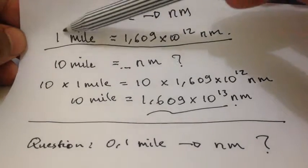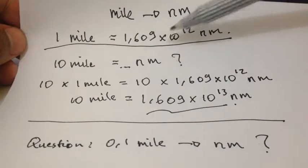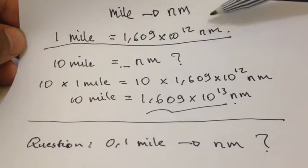Before that we need to know that 1 mile is equal to 1.609 multiplied by 10 power 12 nanometers.